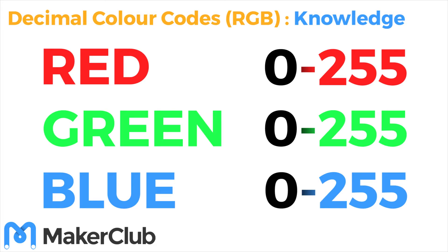0 means the light is set to off, and 255 means you're showing the maximum brightness for that colour, and you can set the number anywhere in between.